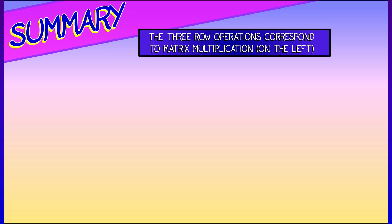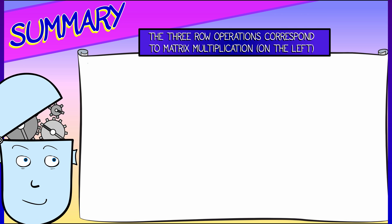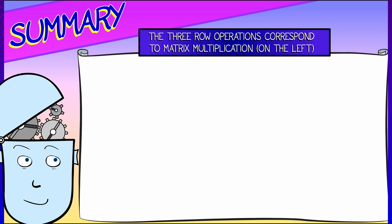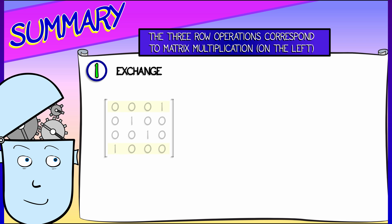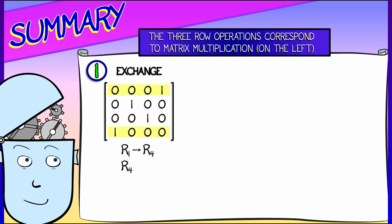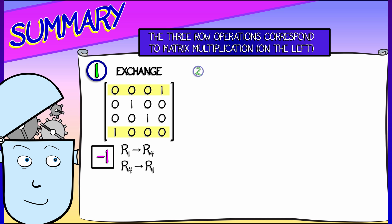Let's go over what we've learned about what happens to the determinant of a matrix under row operations. The first operation, a row exchange — what does that do to the determinant? That winds up multiplying the determinant by a factor of negative 1. It flips the sign.